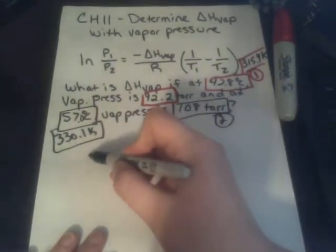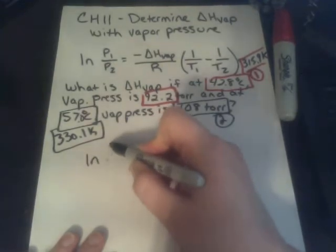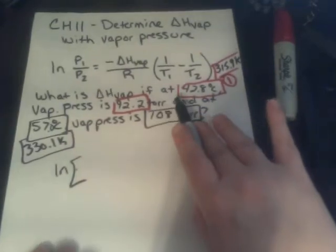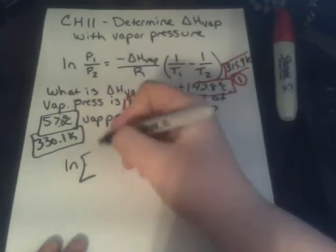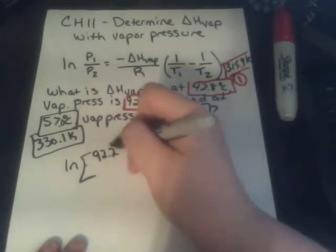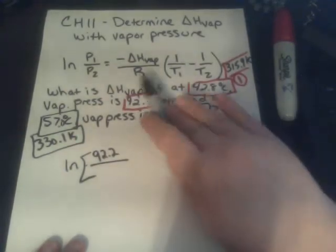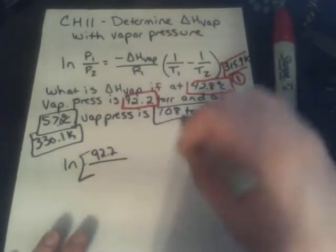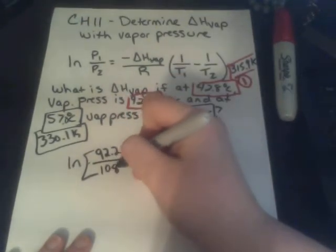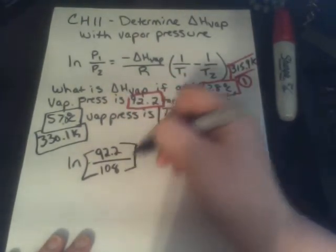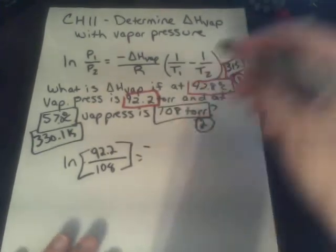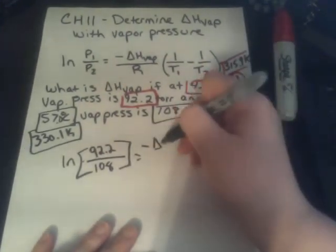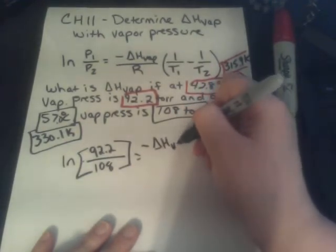So what we need to do is, so ln of, and what's my pressure for my first scenario? That is 92.2, so it's going to be 92.2 divided by, and what's my pressure for my second scenario? That's going to be 108 torr. Equals negative, and this is the heat of vaporization, right? This is our unknown, the enthalpy of vaporization,